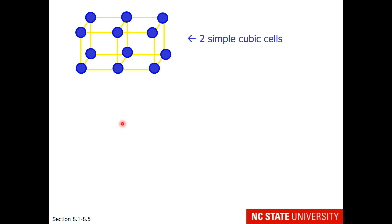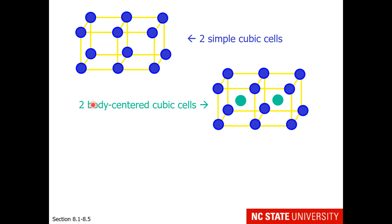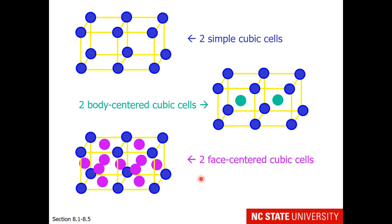This next slide is just to remind you to think about the entire crystal structure and the fact that corner atoms are shared between unit cells. Here are 2 simple cubic cells together. Here are 2 body-centered cubic unit cells — notice the pattern: corner layer, center layer, corner layer, center layer, corner layer. And finally, here are 2 face-centered cubic cells — notice how the corners are shared and the face is shared between adjacent unit cells.